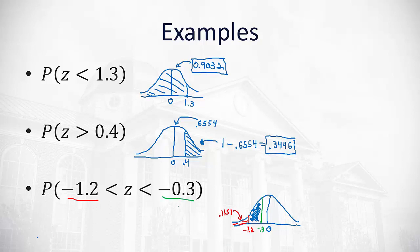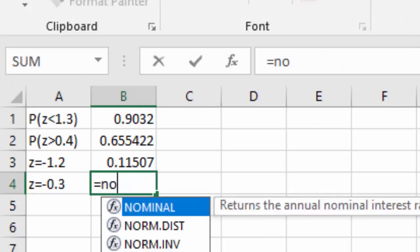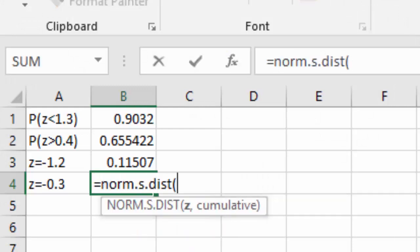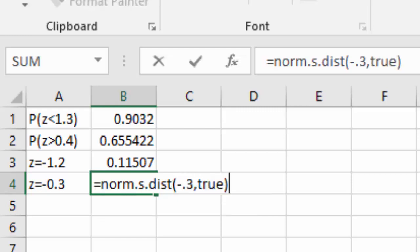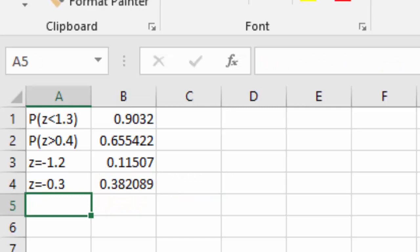What about the negative 0.3? If z is negative 0.3, we can say equals norm.s.distribution. Negative 0.3, true. And that's going to give us an area of 0.3821.